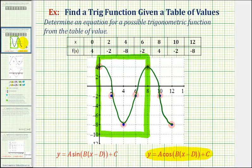So if we go back to our function, let's start by identifying the midline. The midline will be halfway between the maximum and the minimum. And since from 4 to negative 8 is 12 units, and 12 divided by 2 is 6, our midline will be at y equals negative 2.